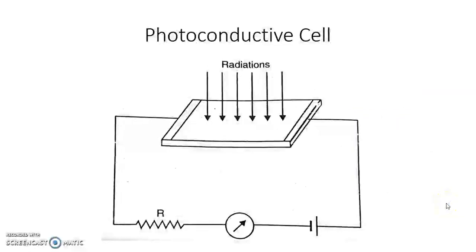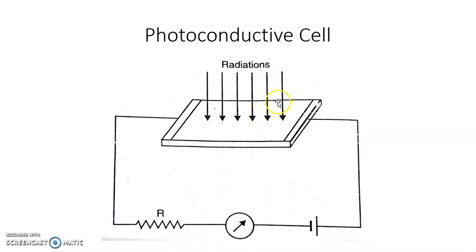In the photo conductive cell, input light radiations are measured in terms of the change in resistance of the material on which the light falls. This cell uses a semiconductor material whose resistance changes according to the radiant energy received. The resistivity of semiconductor materials like selenium, cadmium sulphide, and lead sulphide decreases when light radiations fall on them.